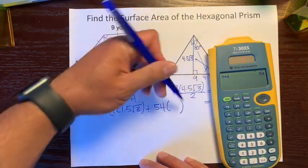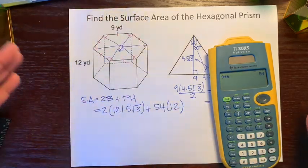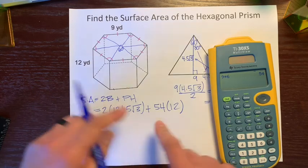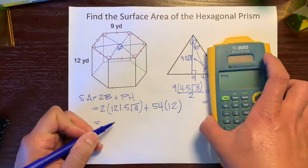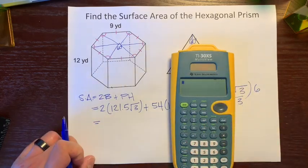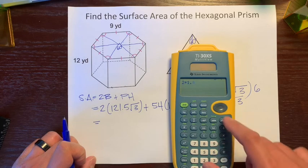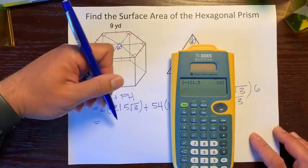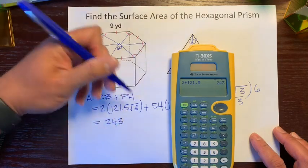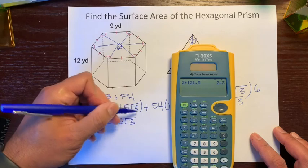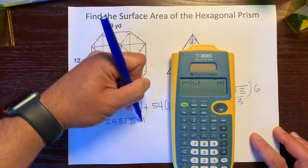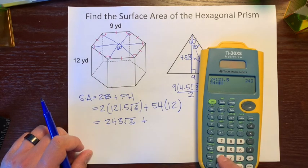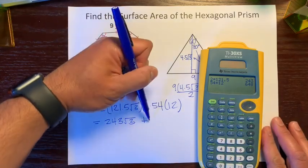The distance between the two bases looks like it's 12. So now we have everything. We multiply: 2 times 121.5 is 243, so we get 243√3. Then 54 times 12 is 648. So our expression is 243√3 plus 648.